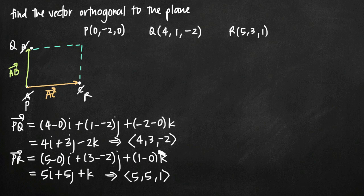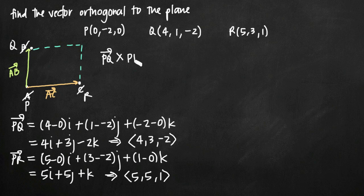To find the vector orthogonal to the plane defined by PQ and PR, we take their cross product: PQ × PR. Remember, we denote the cross product with the × symbol, which distinguishes it from the dot product. For the cross product, we set up a 3×3 matrix with i, j, k in the first row; the direction numbers of PQ — 4, 3, -2 — in the second row; and the direction numbers of PR — 5, 5, 1 — in the third row.